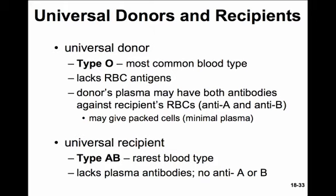The universal recipient is type AB — the most rare blood type. These percentages vary around the world, as they evolved in different places as mankind traveled across the earth.